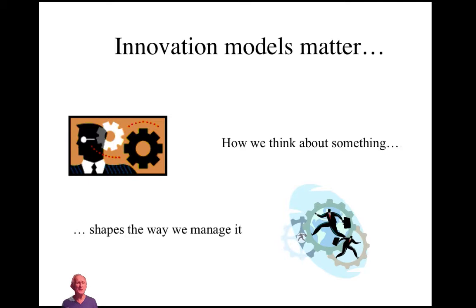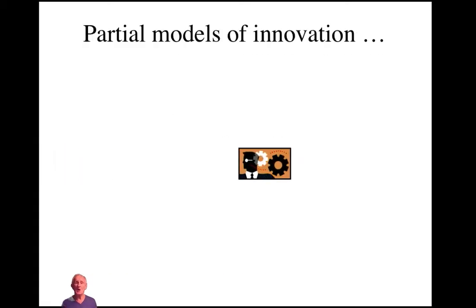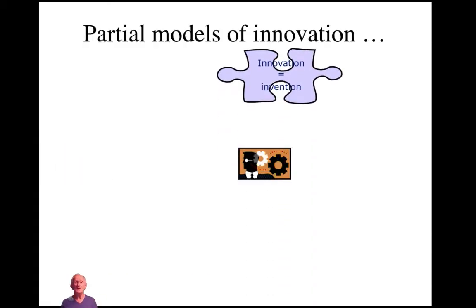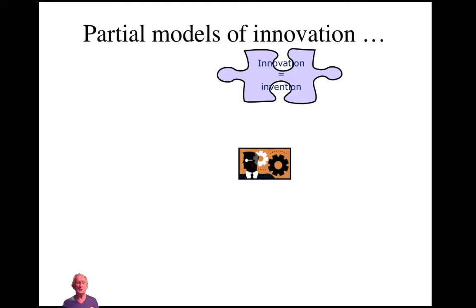One of the challenges we find in managing innovation is the idea of partial models. For example, we can think of innovation as involving ideas — 'idea equals innovation.' We know that there's more to it than that. Ideas are needed at the start, but they're not enough — it's a very poor guide to managing the whole innovation journey. It's like a jigsaw puzzle with only one piece; we can't really see what the picture is supposed to be.